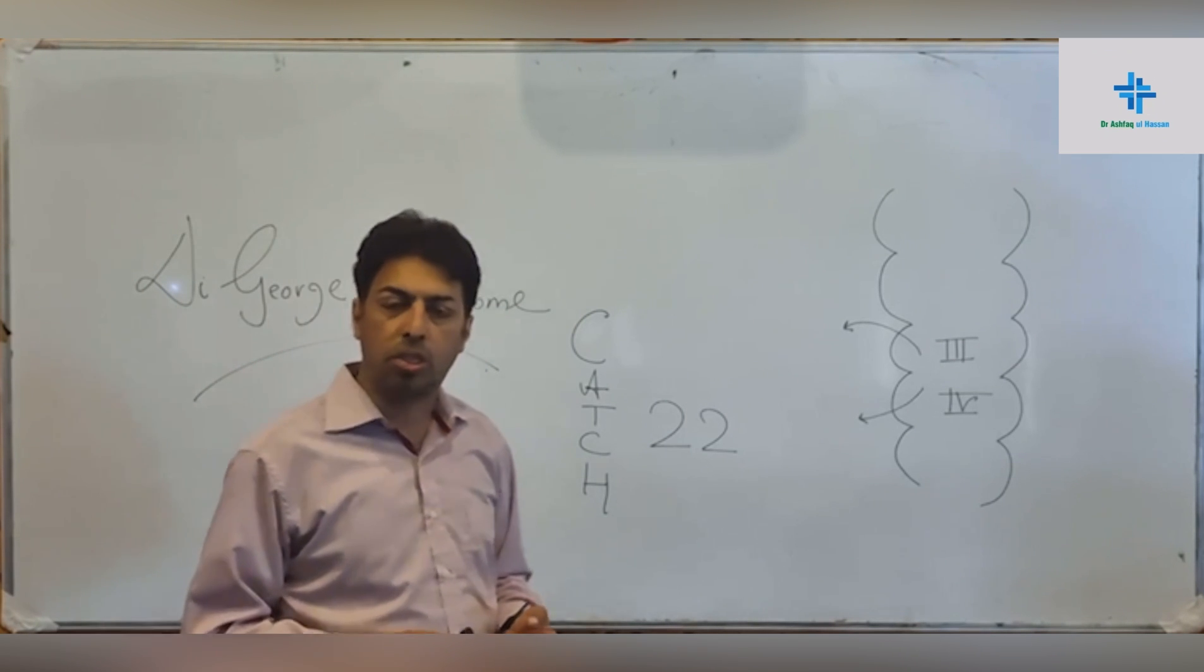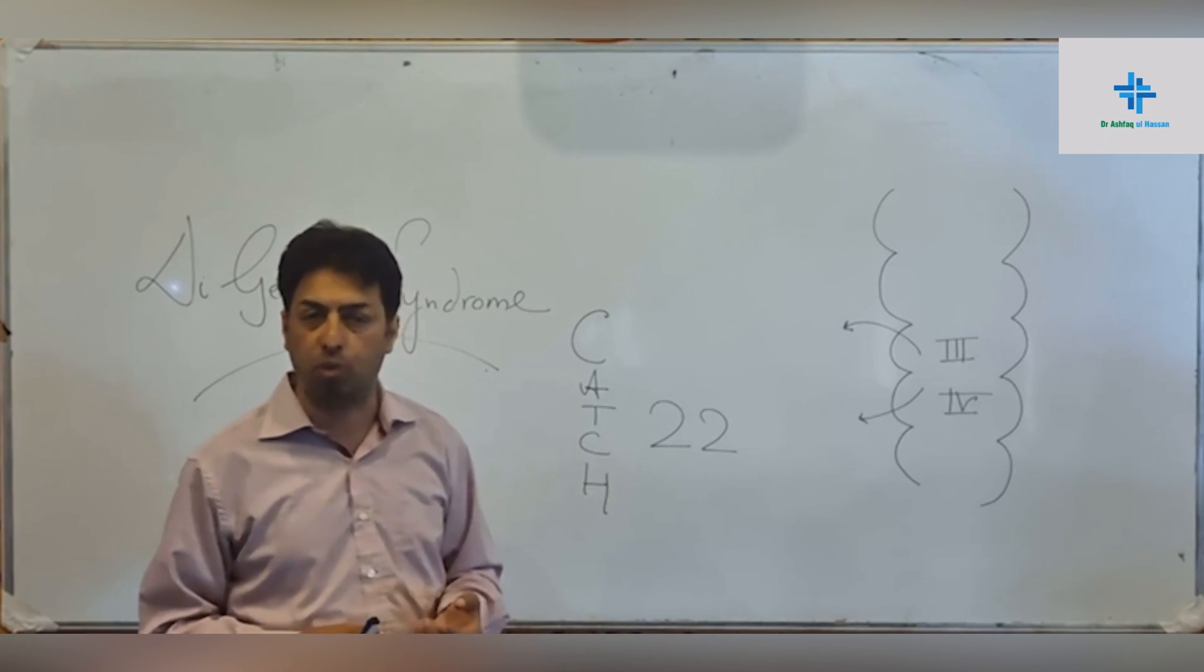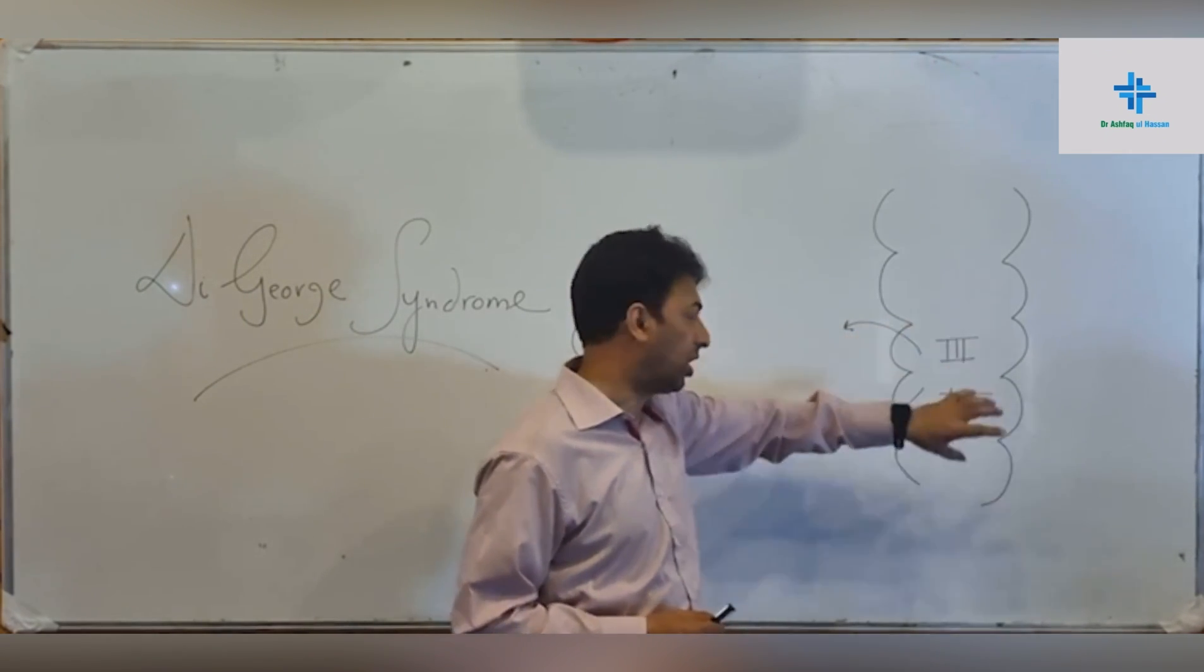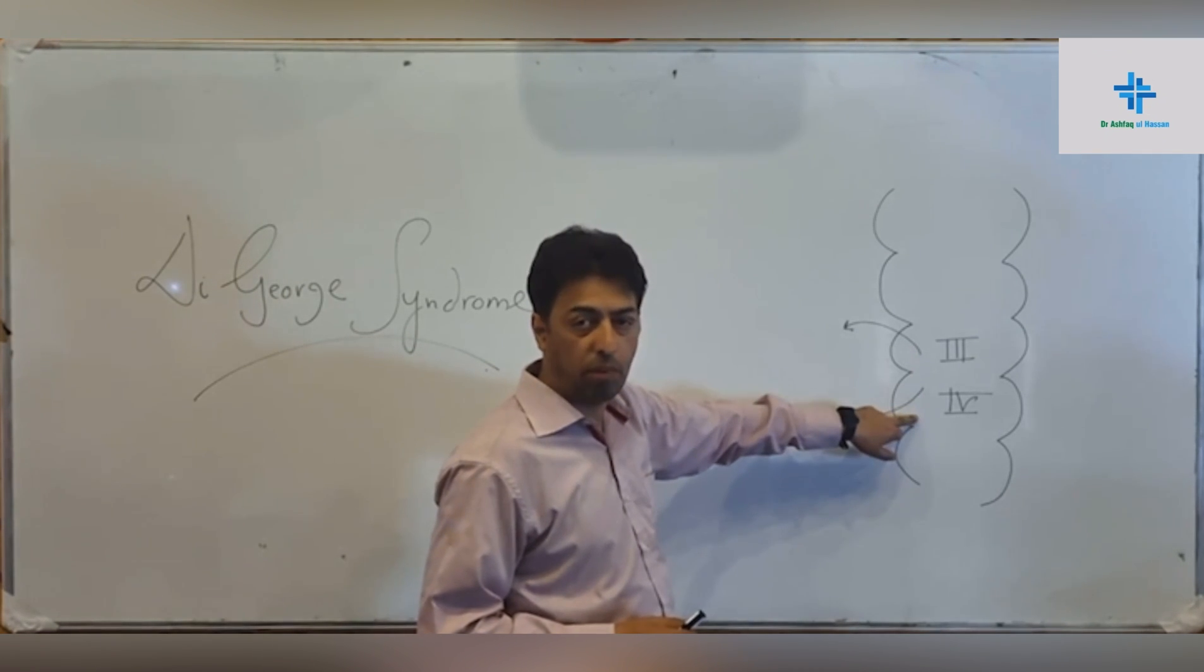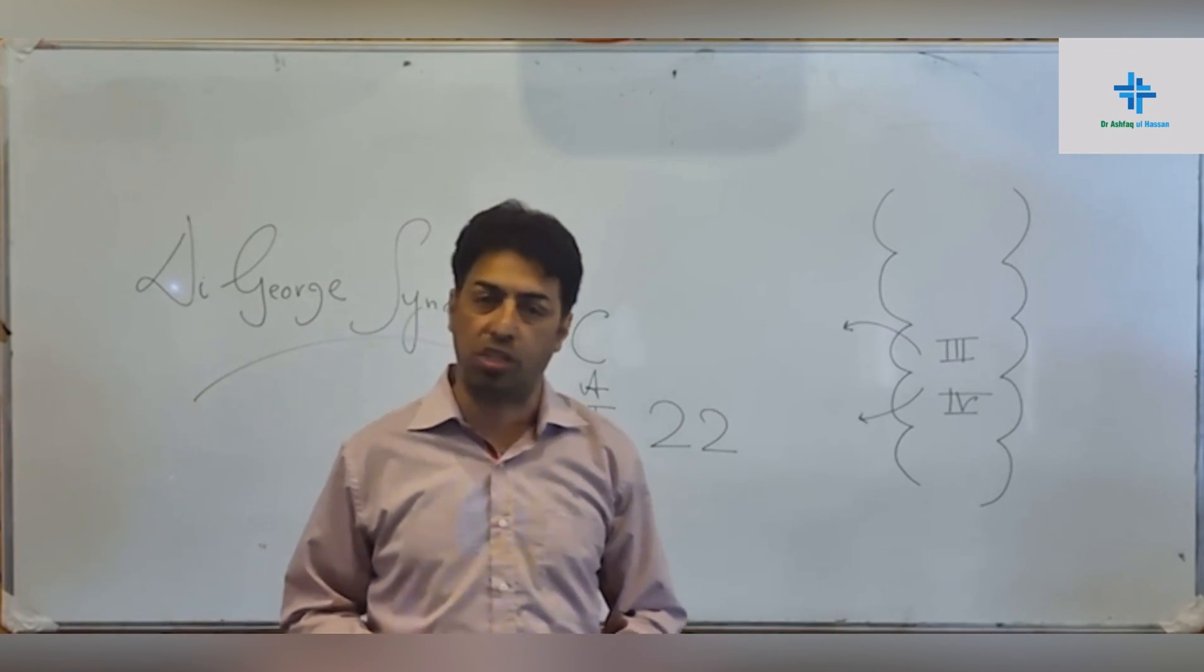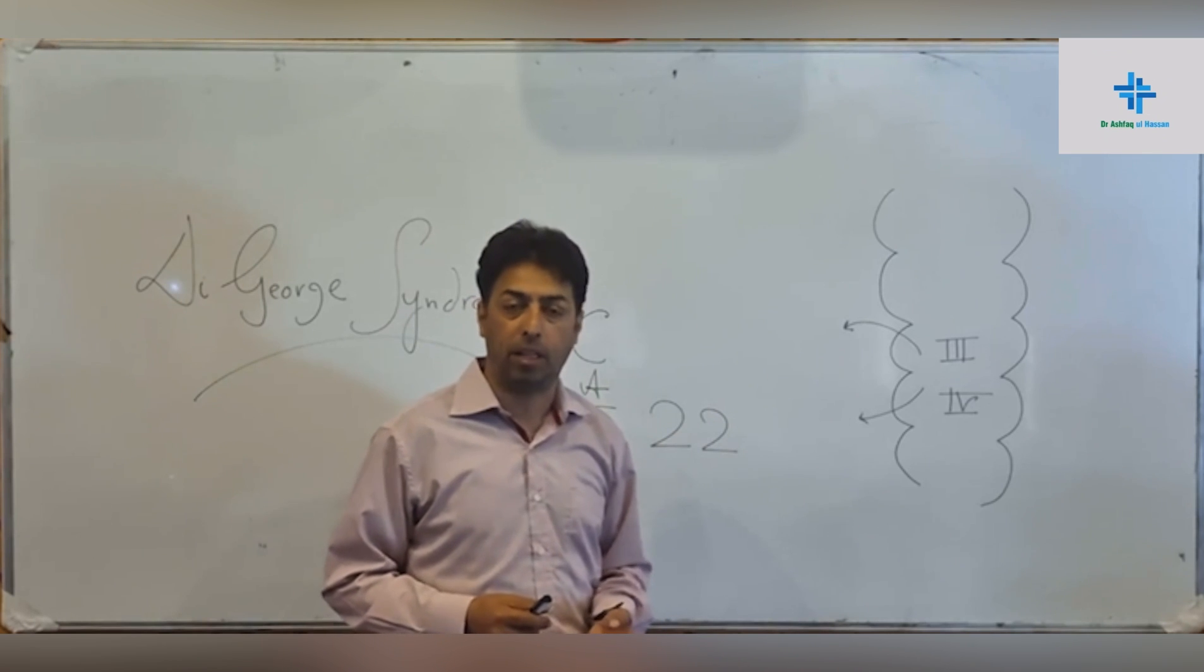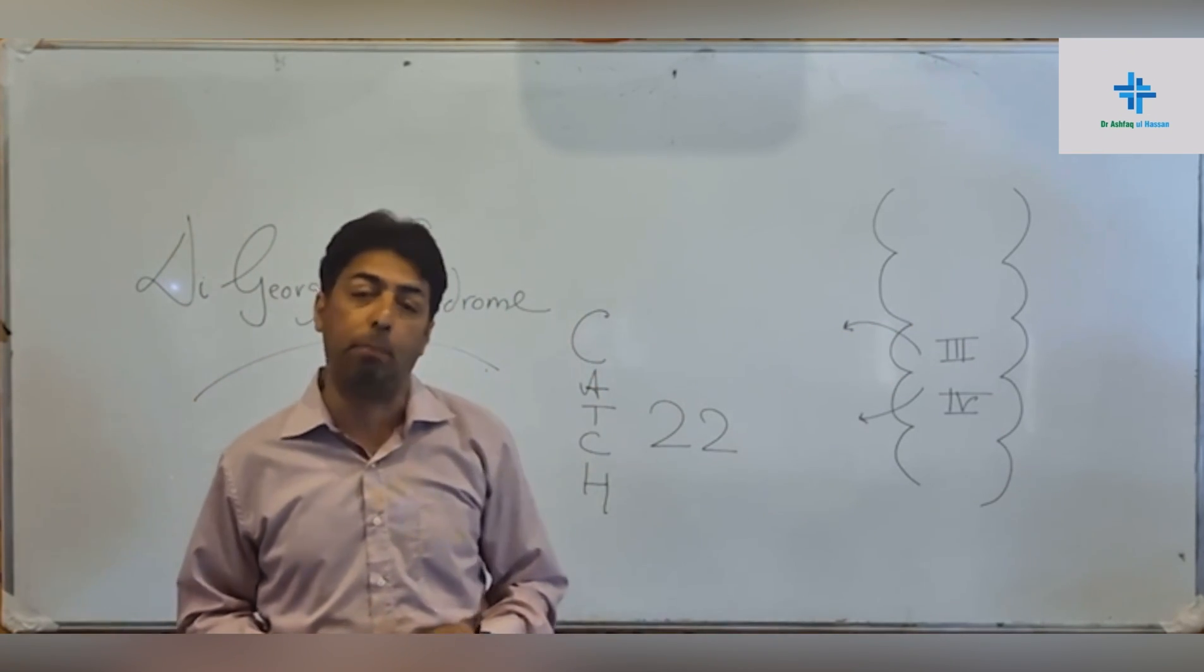We also have hypoplasia or maldevelopment of the parathyroid glands. There are four parathyroid glands—two superior, two inferior—developing in relation to the third and fourth pharyngeal pouches. From the third develop the thymus and inferior parathyroid, and from the fourth develops the superior parathyroid. If there's a defect of the third and fourth, there can be combined parathyroid deficiency or hypoplasia. Parathyroid glands maintain calcium balance in the body. A patient with hypoplasia of the parathyroids can present with hypocalcemia.